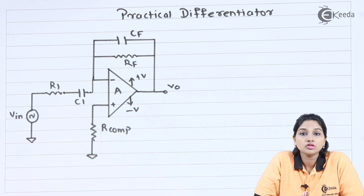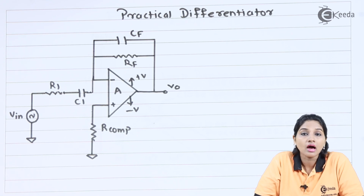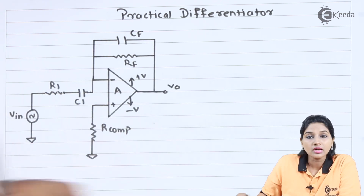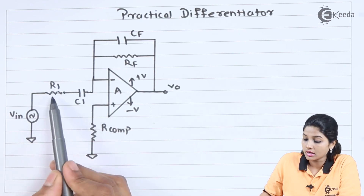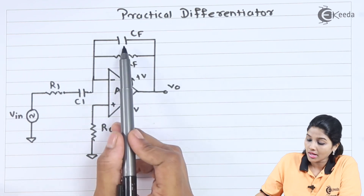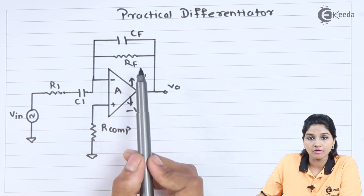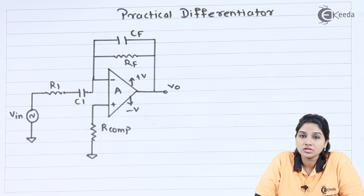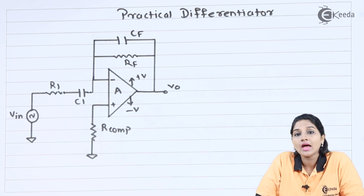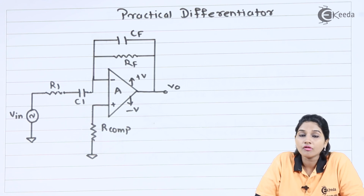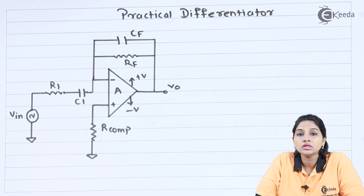In the circuit of practical differentiator, the two components that are required to be added so that the circuit can be used for practical application are resistor R1 and capacitor CF. From the circuit diagram we see that resistor R1 is connected in series with capacitor C1, and capacitor CF is connected in parallel to resistor RF. The introduction of resistor R1 along with capacitor C1 reduces instability of the circuit even at high frequency, because the addition of R1 controls the gain of the circuit which depends on the reactance of the capacitor. As gain can be controlled at high frequency, the instability issue can also be solved in case of the practical differentiator circuit.